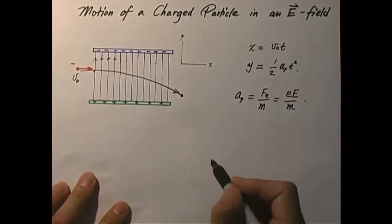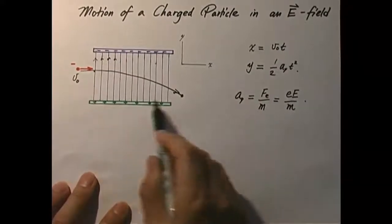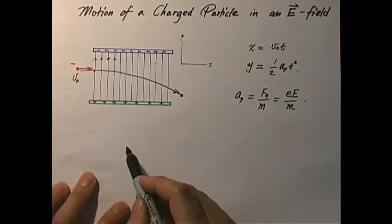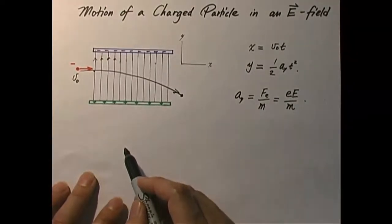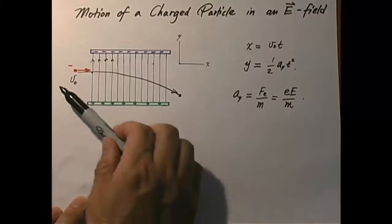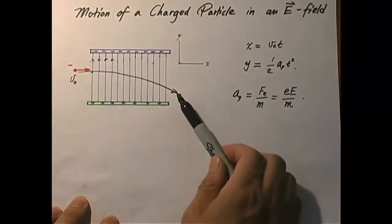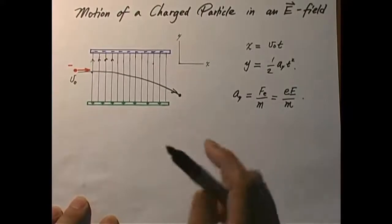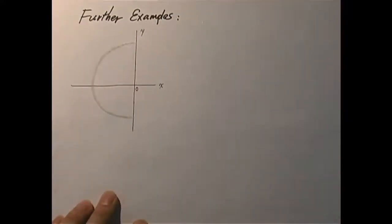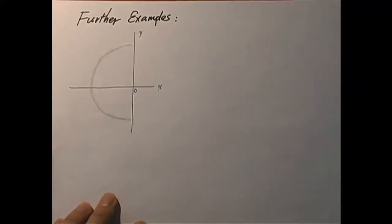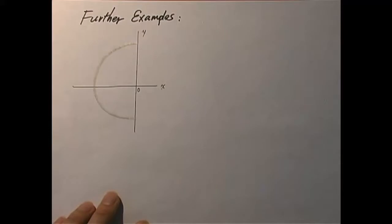In general we can have more complicated situations where the field may not be uniform. We'll also be doing an experiment in which a whole bunch of electrons go through a uniformly charged pair of plates and get deflected. Before we end our discussion in this chapter, I want to look at a couple more examples — this time focusing more on the vector aspect of the electric field.